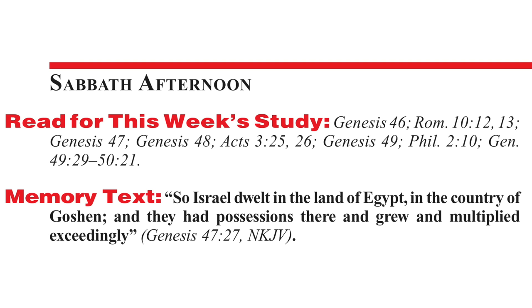Our memory text this week is Genesis chapter 47, verse 27: 'So Israel dwelt in the land of Egypt, in the country of Goshen, and they had possessions there and grew and multiplied exceedingly.'